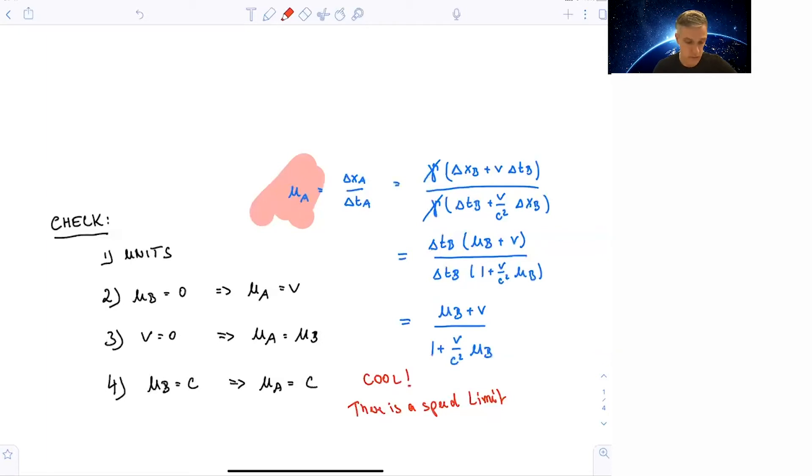If you check now what happens if you set uB equal to 0, meaning that the escape rocket is at rest with no velocity with respect to Bob's reference frame, we find that uA is equal to v, exactly the velocity difference, the relative velocity between those two reference frames. If that velocity is 0, we find uA equal to uB. Again, that's expected. If Bob and Alice are in the same reference frame and they observe the same escape rocket, they better measure the same velocity.